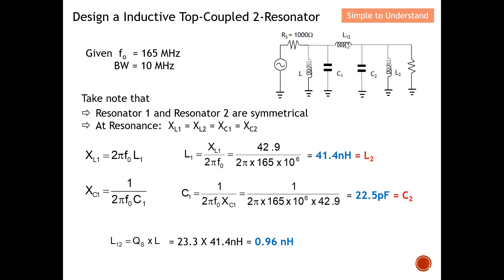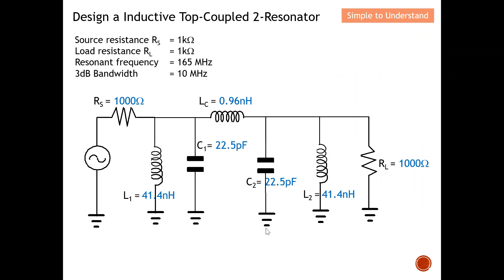Last but not least, let's find the coupling inductor. It is governed by the equation: L12 = L / Qs, where Qs is 23.3 and L is 41.4 nH. Therefore L12 = 0.96 nanohenries. This is the coupling inductor. I want to highlight that comparing to the Top-C coupled two-resonator, the L and C values are exactly the same — only the way we calculate the coupling inductor or capacitor differs — and the numbers are also pretty close to each other.